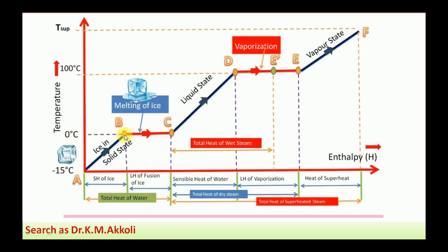When it reaches 0 degree Celsius it is still in the form of ice. Then if you heat it further, the ice starts melting and converts into liquid, while the temperature remains at 0 degree Celsius but its enthalpy increases. From A to B it is solid state; B to C is the conversion from solid to liquid state, which is called the latent heat of fusion of ice — the amount of heat required to convert 1 kg of ice into 1 kg of water.